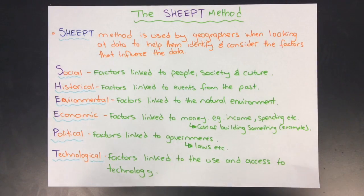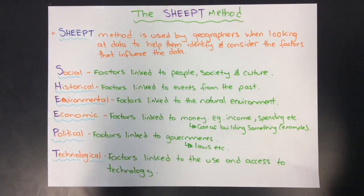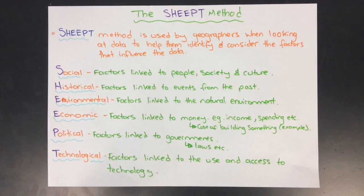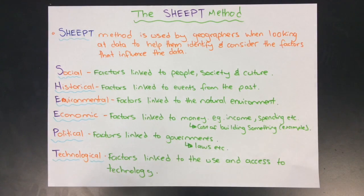They might look at H for historical factors that are linked to events from the past, and think about how that influences the data that they're looking at. E for environmental — environmental factors that influence the data.